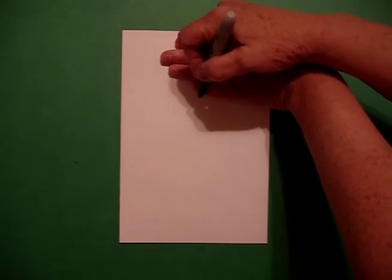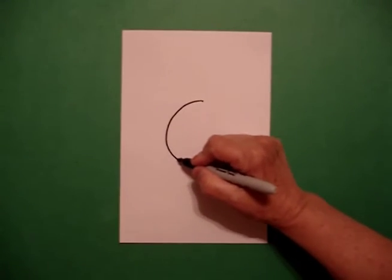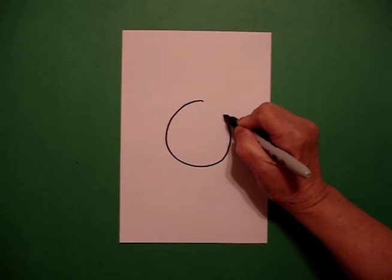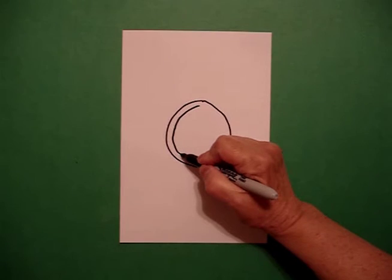I'm going to take four fingers from the top in the center and put a dot. And from that dot, I'm going to draw a pretty good sized circle.